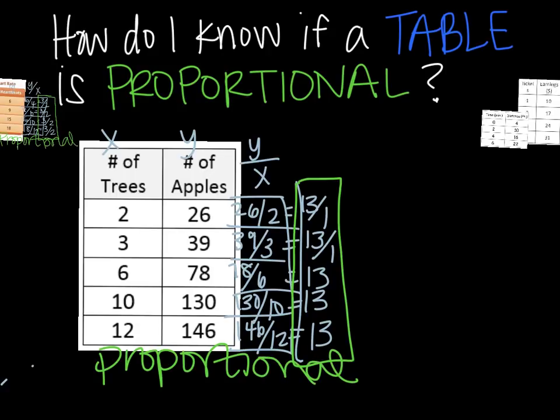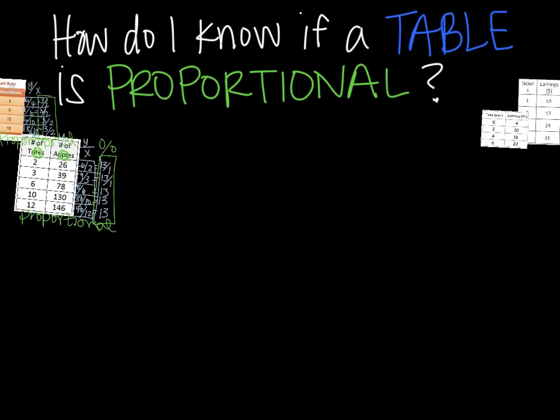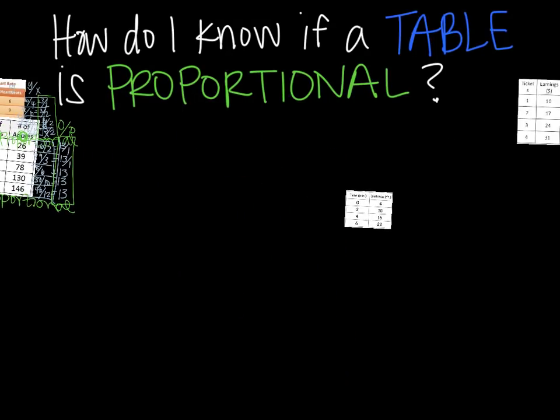Now, you might see on a table, 0, 0. So I just want to talk about that quick. If you see 0, 0 on a table, when you do y over x, it's not going to work. You're not going to get the same thing. You would end up with 0 over 0. Now, you should know that that's okay. Because part of a proportional relationship is going through the origin. So if your table has 0, 0, you should have that. That's okay. Because part of the requirement of proportional is going through the origin.